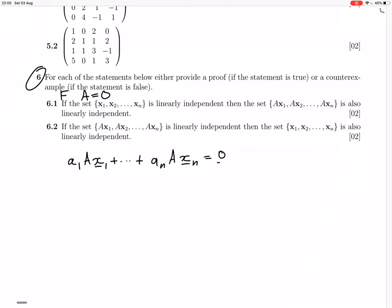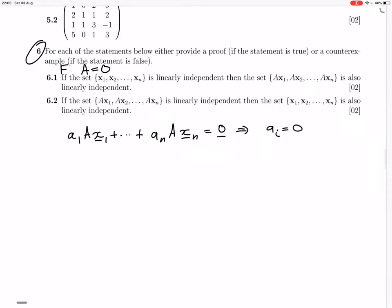And so that equals zero. Oh, no. What we... Yeah, we know that's independent, so we know that that implies that all the scalars are zero, right?